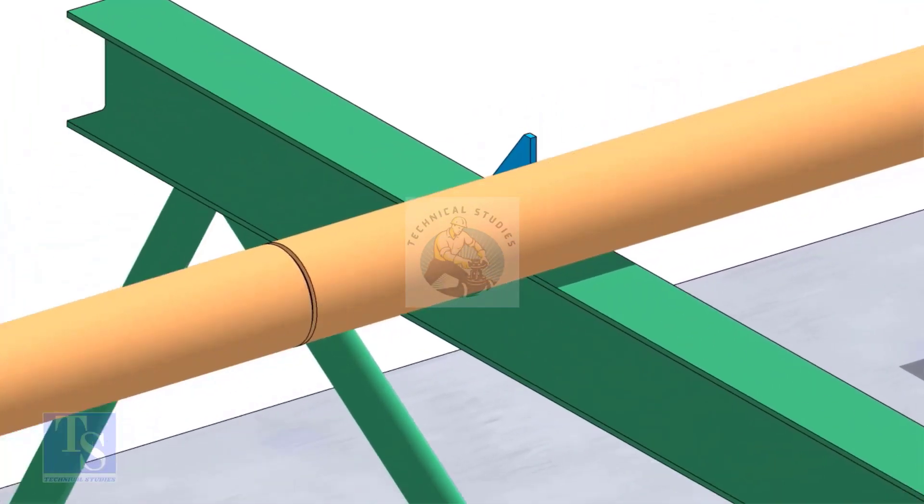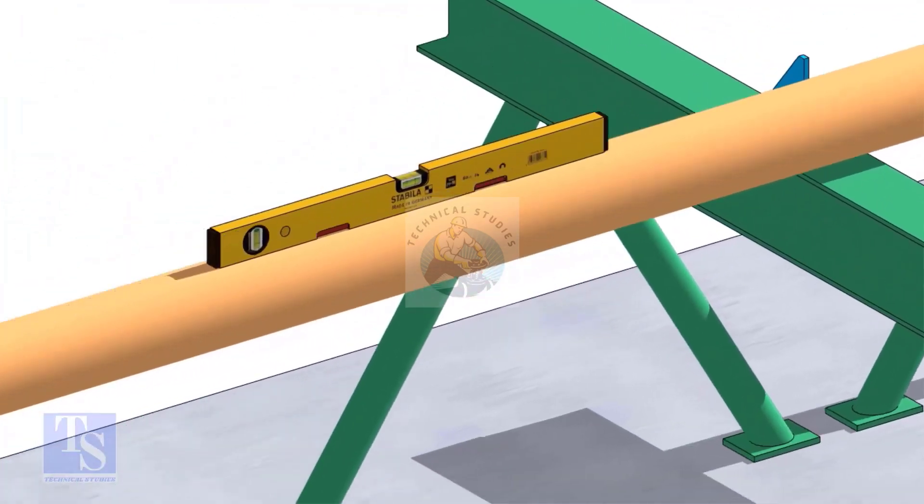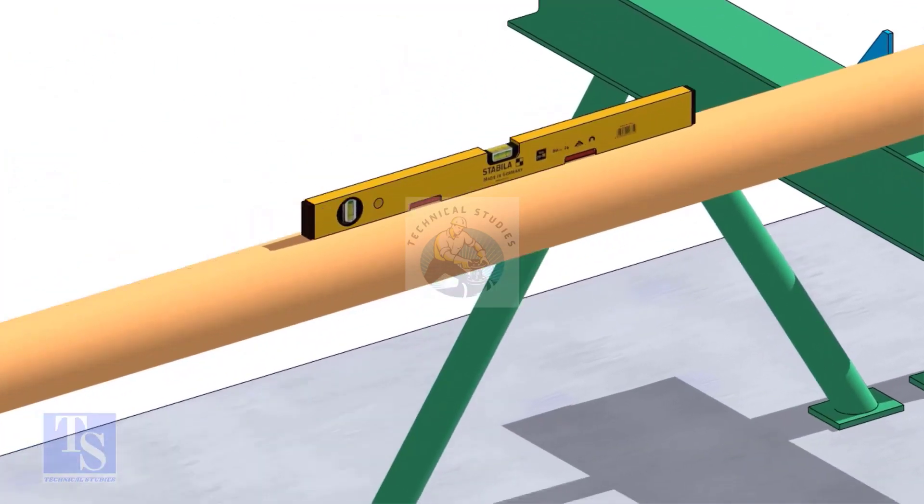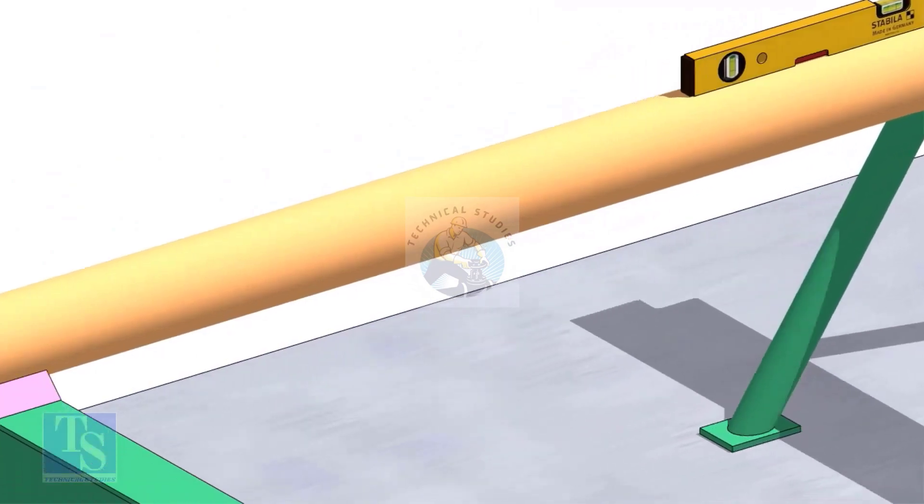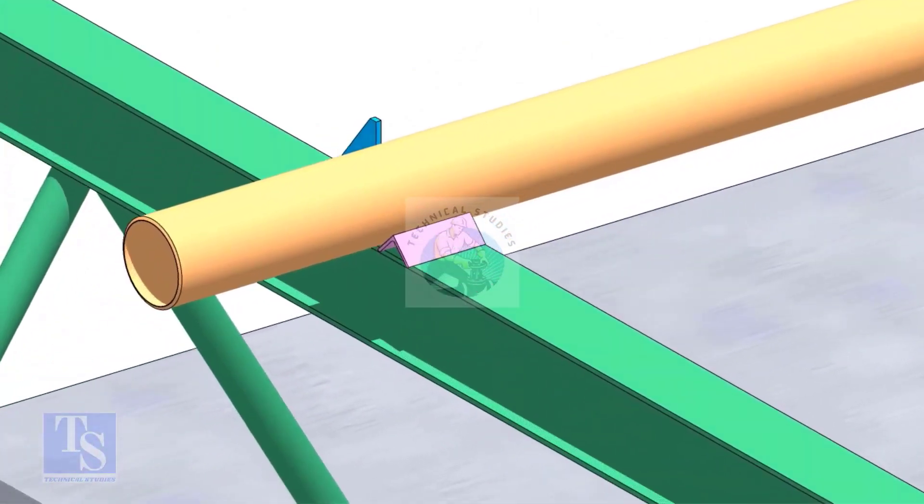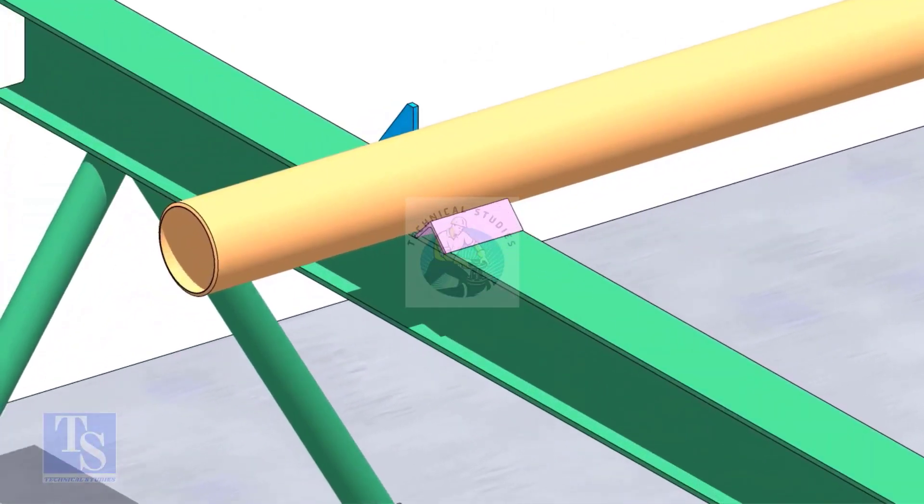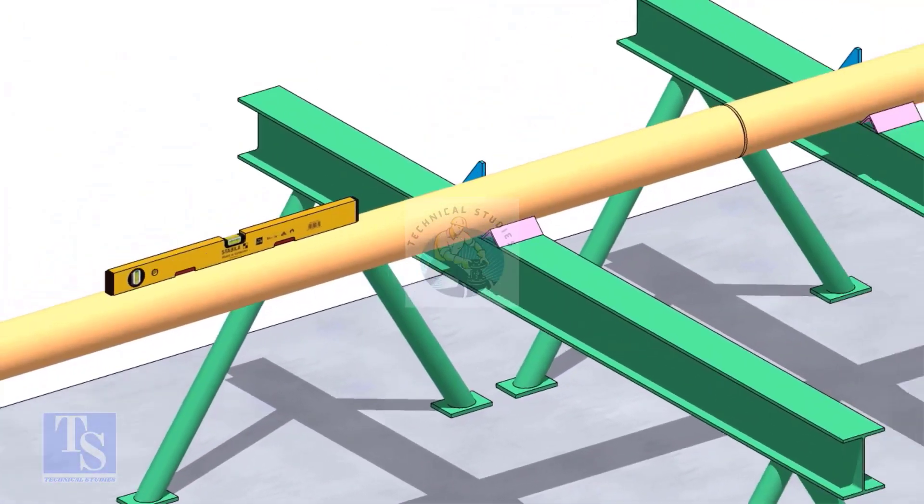You can cross-check the level of the pipes. Arrest the pipes from the other side using wedges or angle stubs.